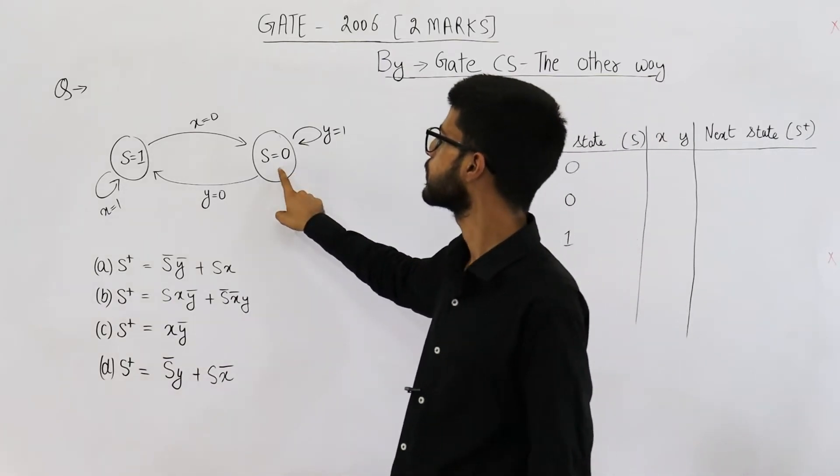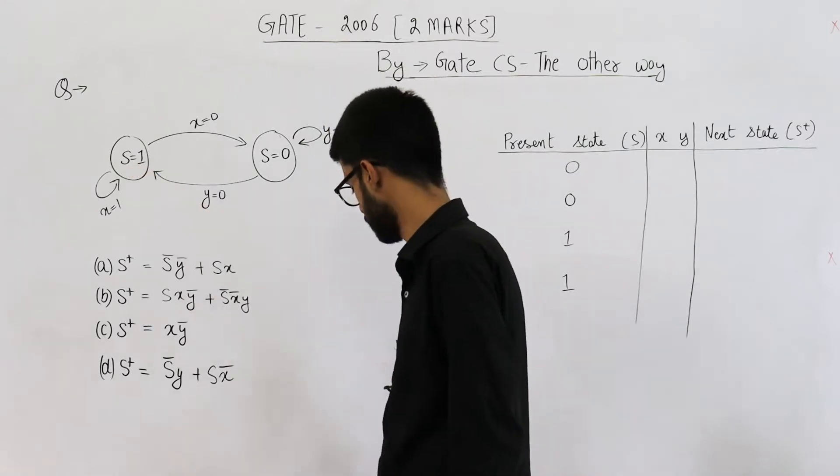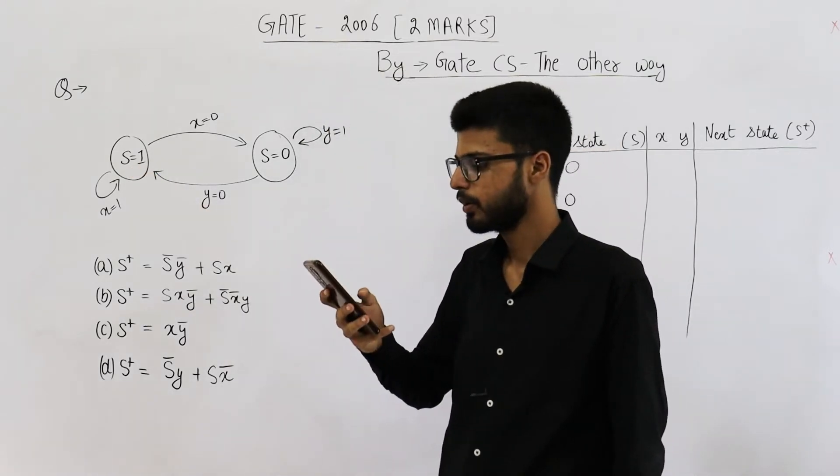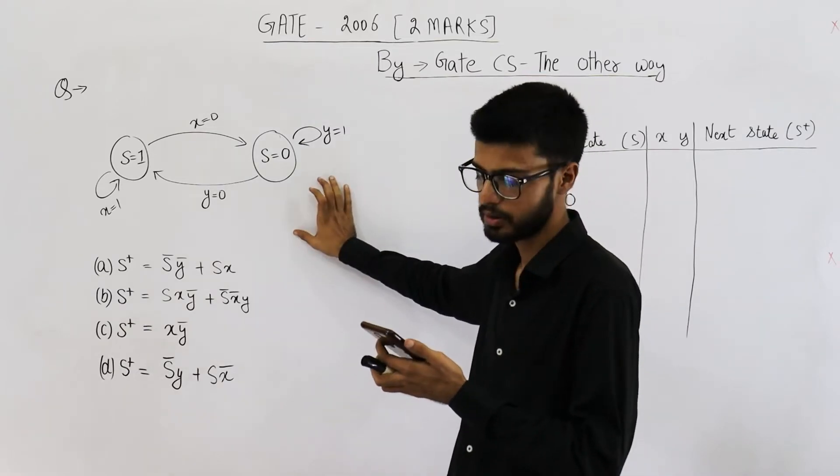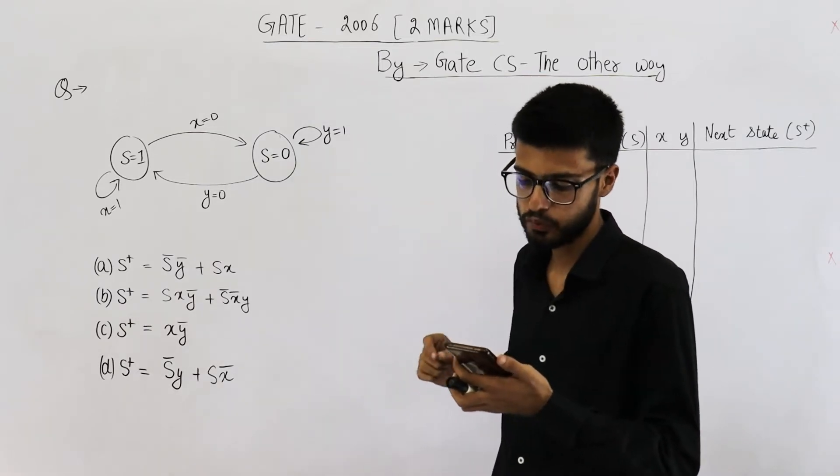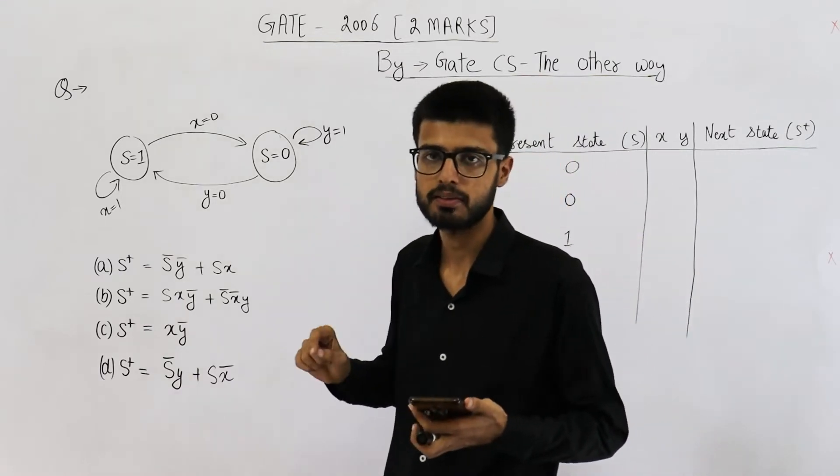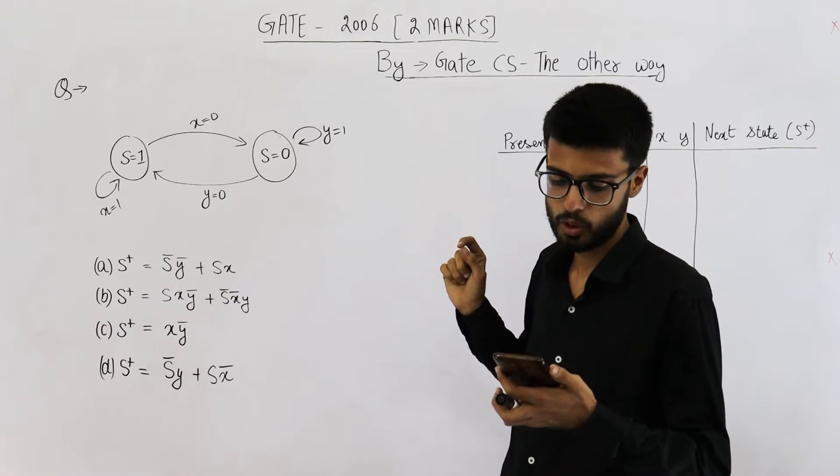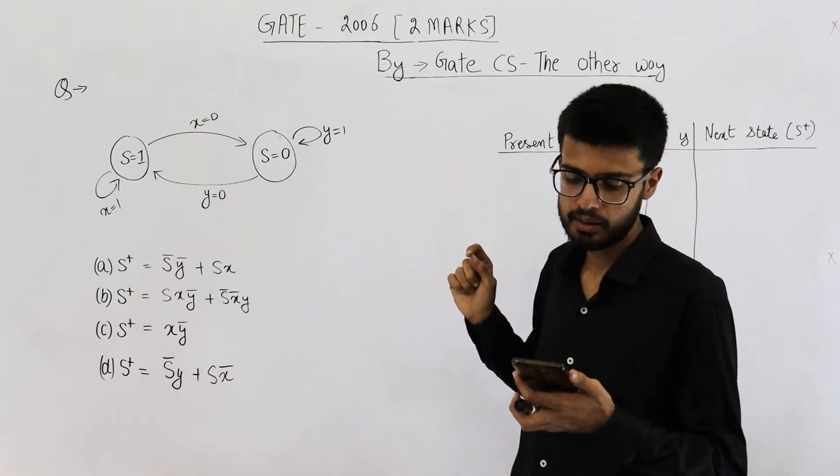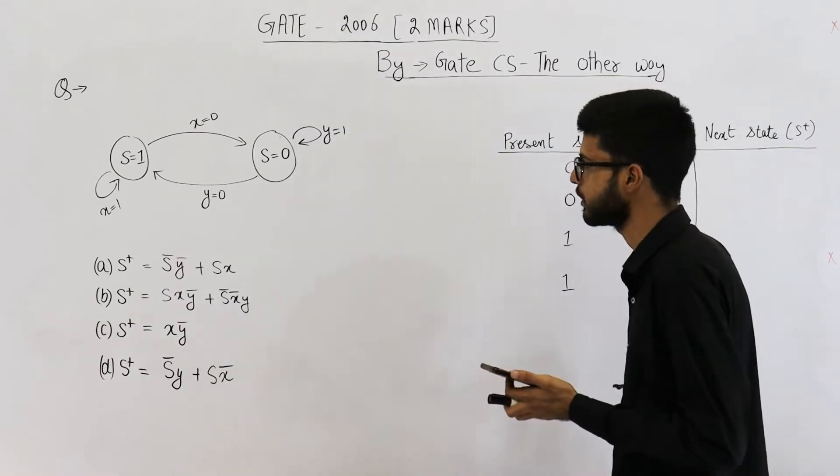It has two states 0 and 1. Let me read the question once. For a state machine with following state diagram, so this diagram is given, the expression for next state s plus. Next state is s plus. The expression for next state s plus in terms of the current state and the input variables x and y is.